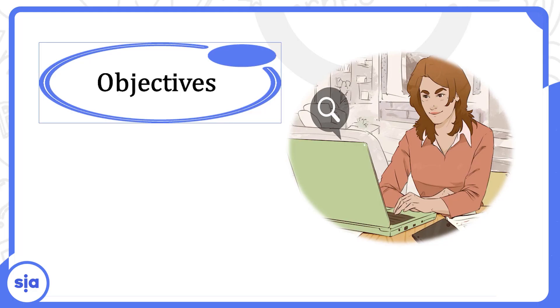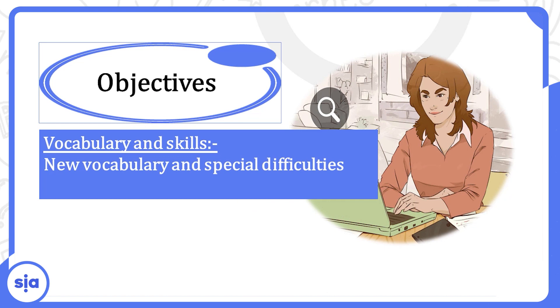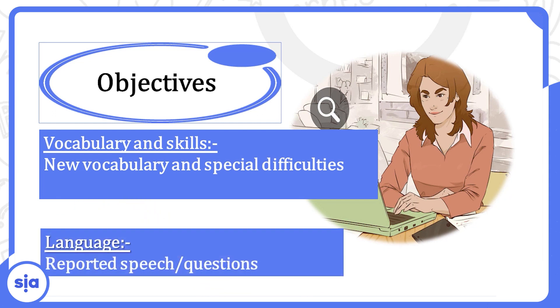Hello, dear students. How are you all? Welcome to a new English episode. Today we're going to continue talking about unit 12. And as usual, we start with our objectives. هنقرأ أهداف الدرس مع بعض. New vocabulary and special difficulties. هنتعلم كلمات جديدة والكلمات اللي بنتلغبط فيها. Again, we are talking about reported speech questions. هنتكلم عن reported speech questions. إحنا بنتكلم عن الكلام غير المباشر والنهاردة هنتكلم عن الأسئلة.